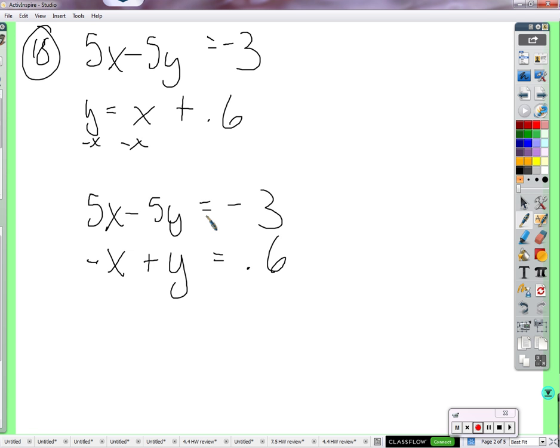equals 0.6. Alright, so that looks good. It's all lined up and stuff. So what do you think now? I'm trying to get the x's or y's to cancel out, right? Well, I mean, you can only just multiply by 5. Okay, multiply the equation by 5.